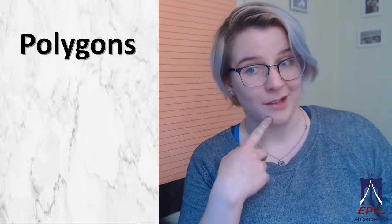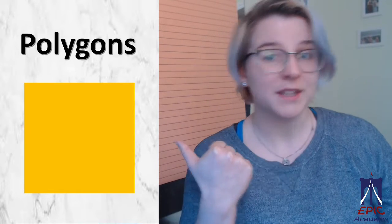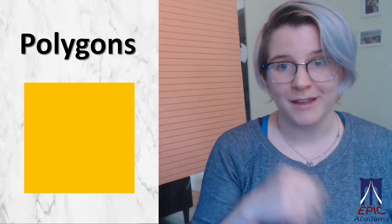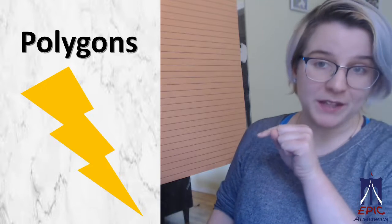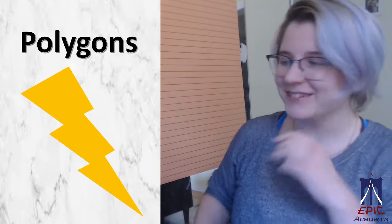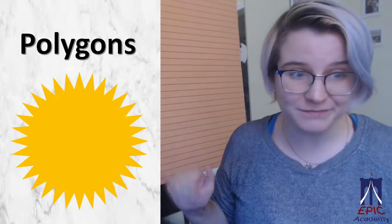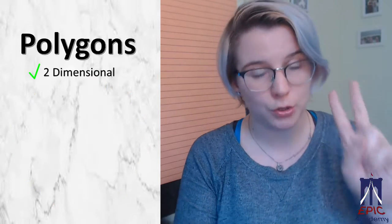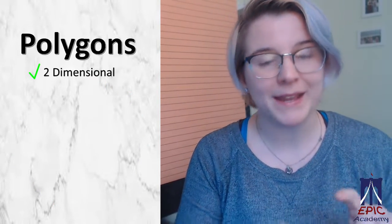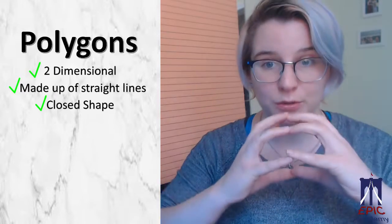What is a polygon? Well, this is a polygon, that is also a polygon, and even this is a polygon. Simply put, polygons are two-dimensional shapes made out of lines that connect to make a closed shape.